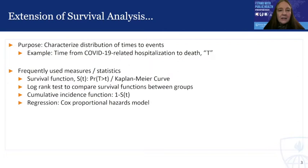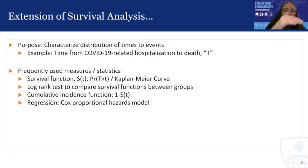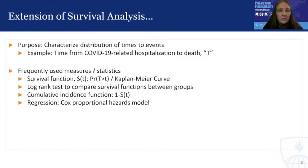First, the survival function, which we label as S of T, is defined as the probability that my event time of interest — here, death — is longer than some time little t. We characterize this as an entire curve, where at each little t on the x-axis, we have the proportion of individuals who have not yet experienced the event. This is a monotone decreasing curve as more and more people fail over time. The Kaplan-Meier curve is a technique by which we can estimate the survival function.